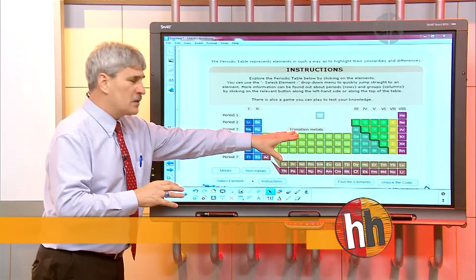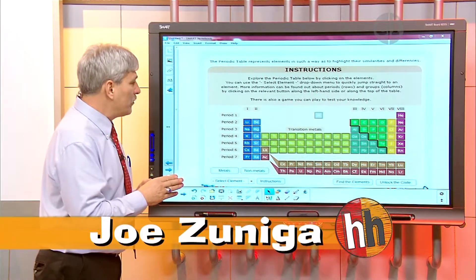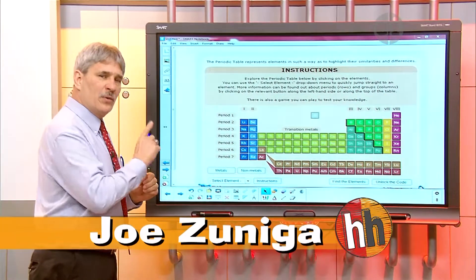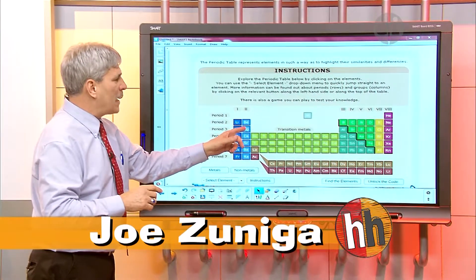One is the way that the elements and the atoms here are arranged. Now our modern periodic table is based on the atomic number. That's something we're going to talk about in just a second, but the atomic number is how these things are all arranged.